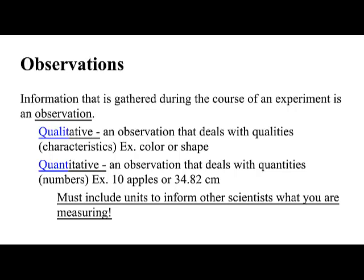Qualitative is an observation that deals with qualities, for example, characteristics like colors, shapes, or textures. Quantitative has the word quantity in it, and that's an observation that deals with quantities or numbers. An example might be 10 apples or 34.82 centimeters. It's something you can count.